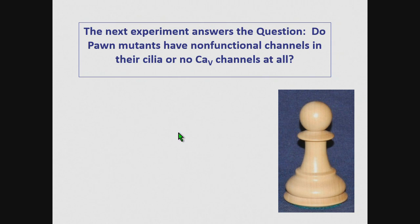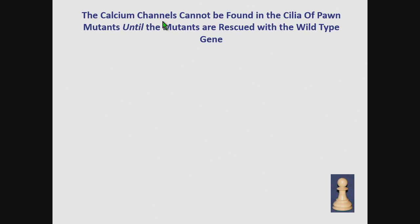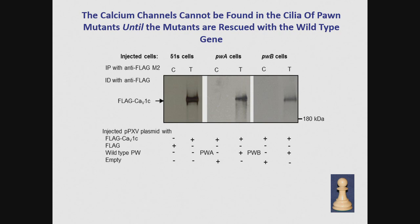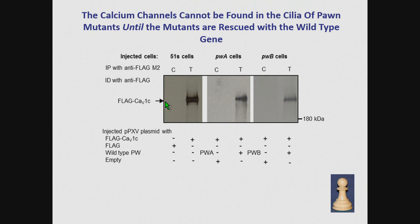The next experiment answers the question: do Poin mutants have nonfunctional channels in their cilia or no calcium channels in their cilia? The calcium channels cannot be found in the cilia of Poin mutants until the mutants have been rescued with the wild-type gene. Here are wild-type cells, Poin-A cells, Poin-B cells. With the wild-type cells, the flag-tagged channel can be found in wild-type cilia — it does traffic there. The cells are transformed only with the epitope-tagged flag, and then Junji will immunoprecipitate flag from the ciliary membrane, and you find nothing.